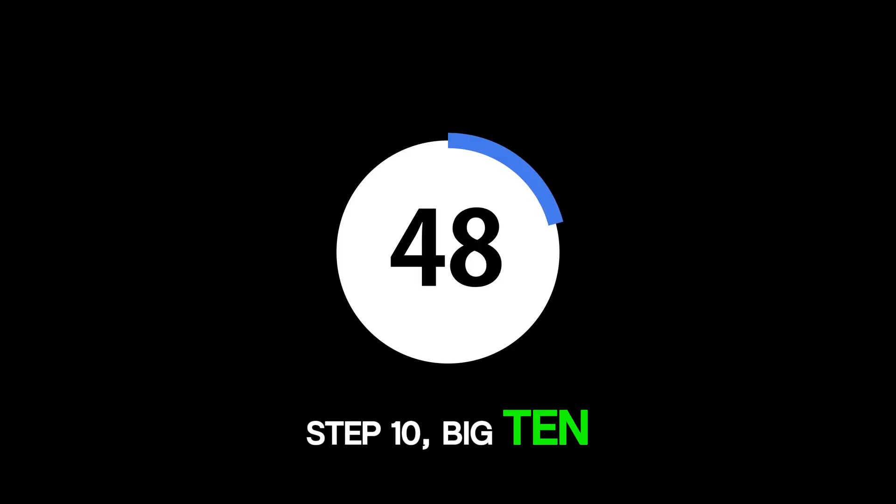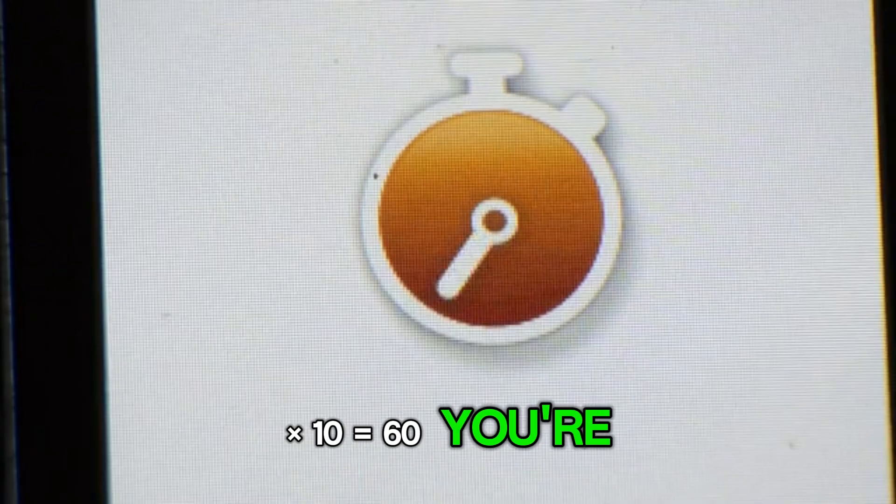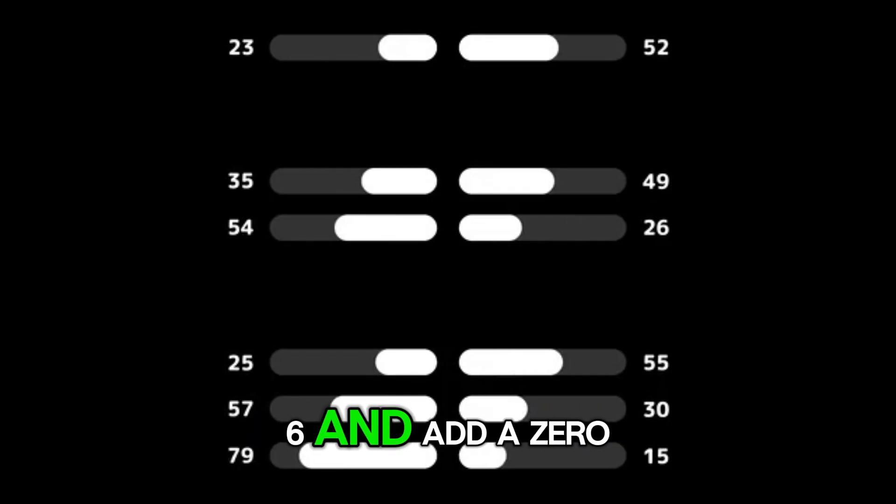Step 10. Big 10. Last but not least, 6 times 10 equals 60. You're doing great. Just take the number 6 and add a 0 after it. That's it.